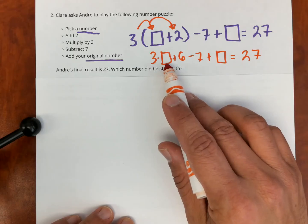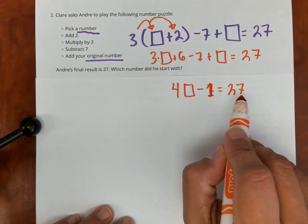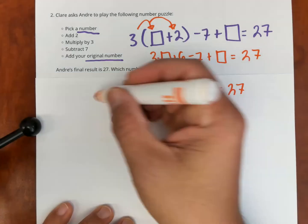How many of my original number do I have? I have four total, right? I have three right here and then another one right there. Now I have a simpler equation, simpler number puzzle that I can solve, and the answer is seven.